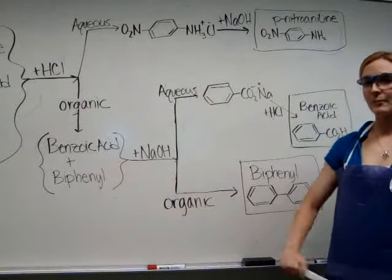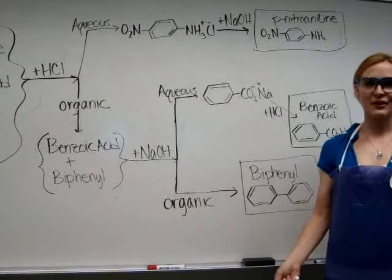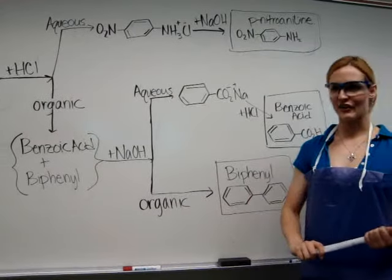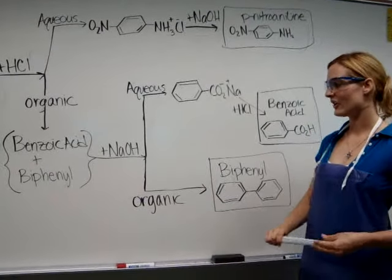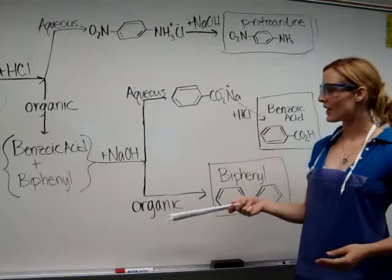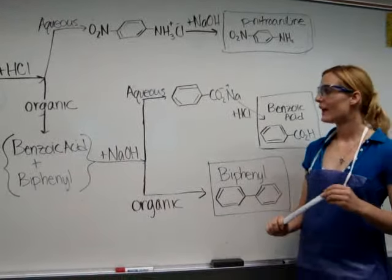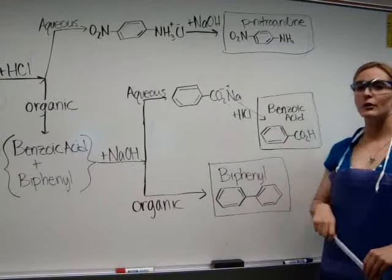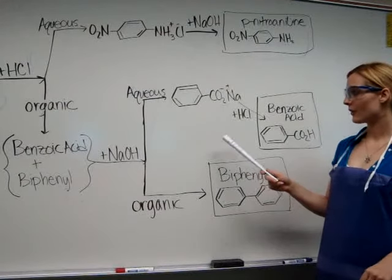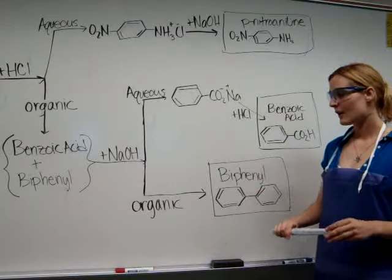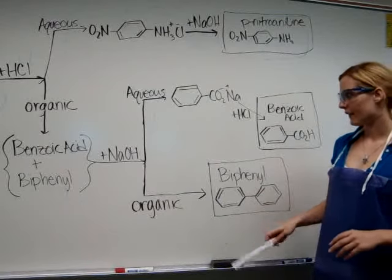In order to extract the benzoic acid, you want to do the reverse of what you did with the P-nitro-aniline. Because benzoic acid is obviously an acid, you want to add sodium hydroxide, a base, to the separatory funnel. In this, benzoic acid will move into the aqueous layer by forming its corresponding salt, while biphenyl will stay within the organic layer.